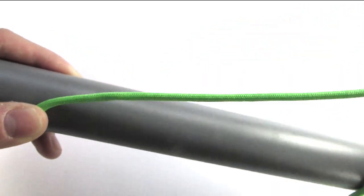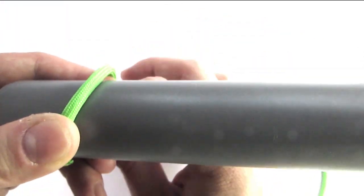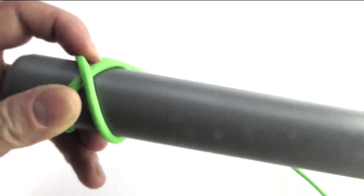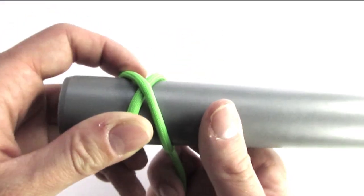I'm going to tie a constrictor knot here as a semi-permanent knot to hold the hitches in place.